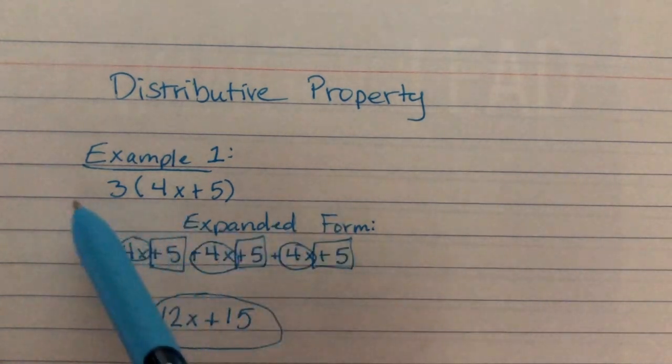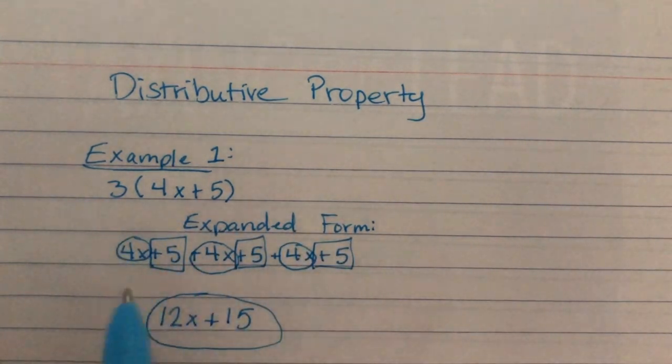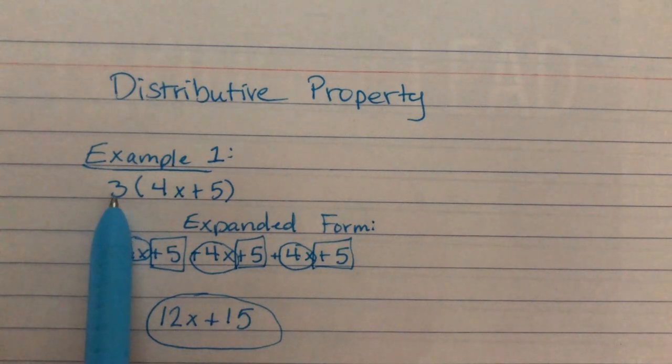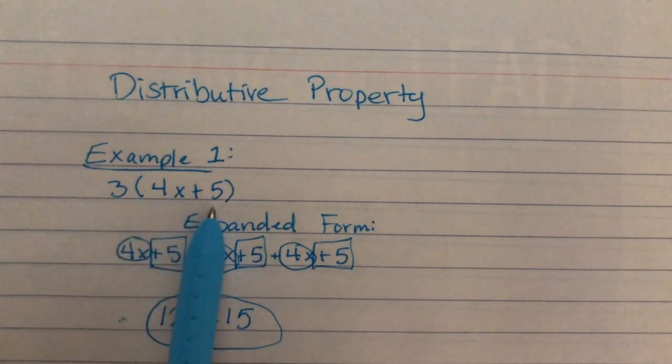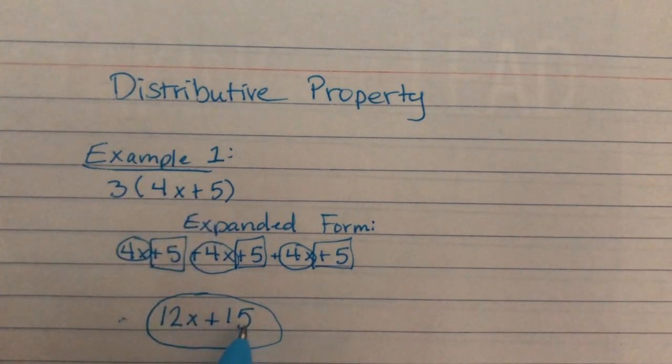Now, if you look at our beginning expression and our ending expression here, you might start to see that there's a little bit of a pattern. So, 3 times 4 is 12, and 3 times 5 is 15.